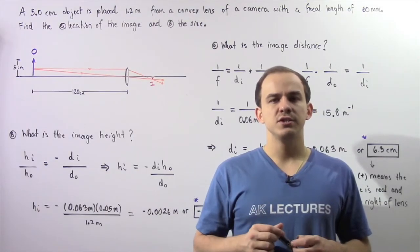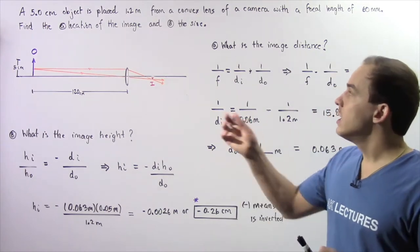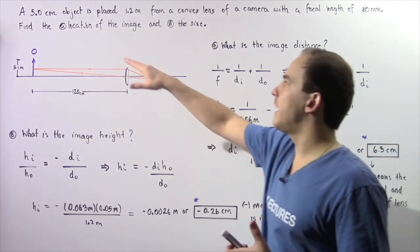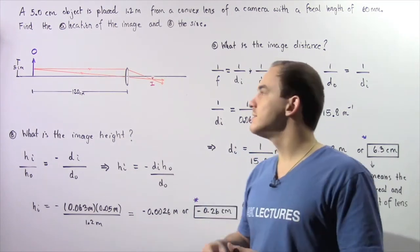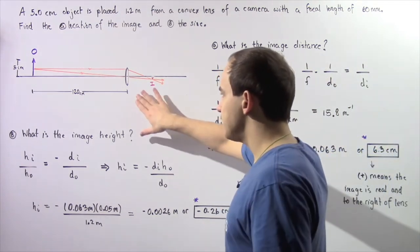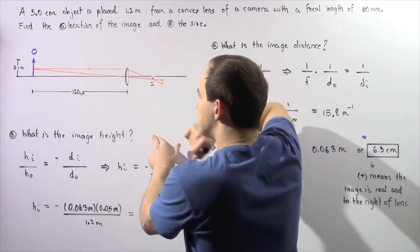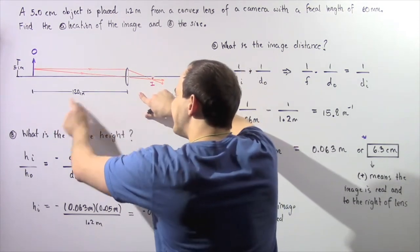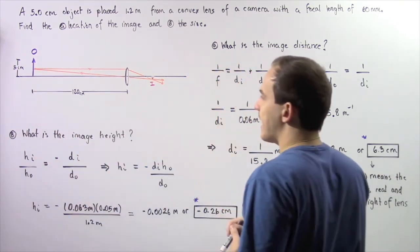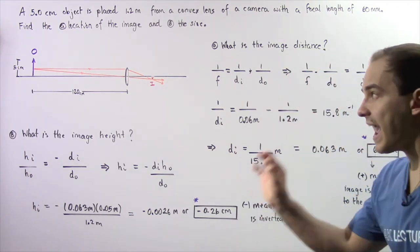In this lecture, we're going to look at an example that deals with convex or converging lenses. Suppose a 5 centimeter object is placed 1.2 meters away from a convex lens of a camera with a focal length of 16 millimeters. In part A, we want to find the location of the image relative to our lens, and in part B, we want to find the size of the image relative to the size of our object. Let's begin by looking at the following diagram. We take our convex lens, which is thicker at the center and thinner at the edges, and place our object 120 centimeters (equivalently 1.2 meters) away to the left of our lens. The object height is given by 5 centimeters.